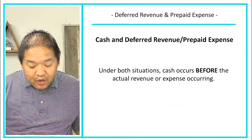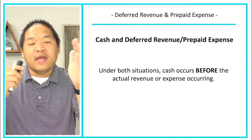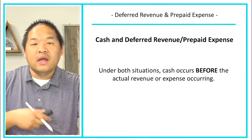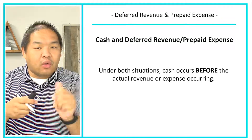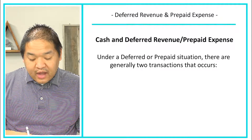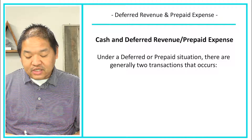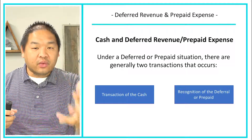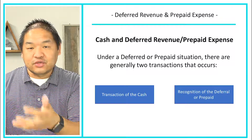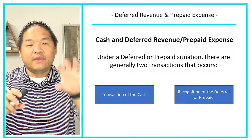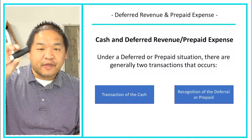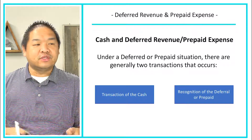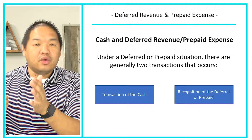Under both situations, cash occurs before the actual revenue or expense occurs. Under a deferred or prepaid situation there are generally two transactions: the transaction of the cash, and the transaction of the deferral of either the revenue or the prepaid expense. When we do journal entries related to deferrals and prepaids, we'll have two sets of entries — the entry for the cash, and then the entry for the actual booking of the revenue or the expense.